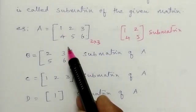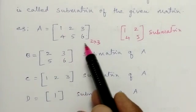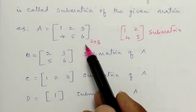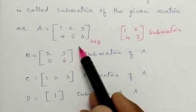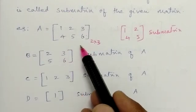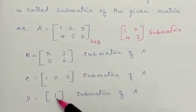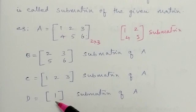You can remove any one row, any one column, any number of rows, any number of columns, or both rows and columns — but in the end, the submatrix must contain at least one element. This is the definition of submatrix.